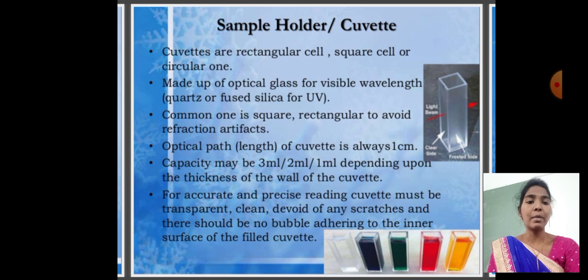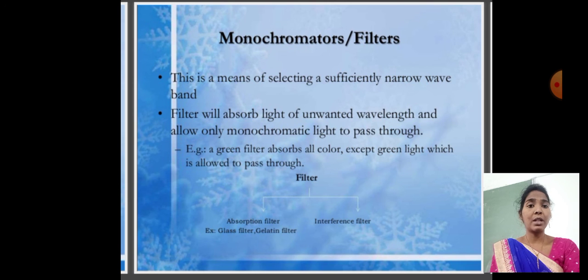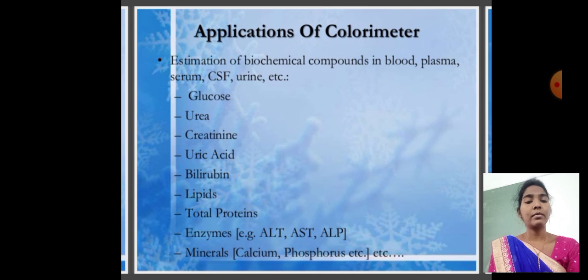The test tubes used are called cuvettes. I am going to measure the color solution. Monochromator is used to spread out the light for the solution. Now we use the colorimeter technique for the instrument's purpose to measure the solution.